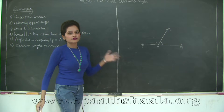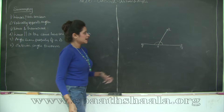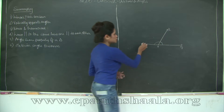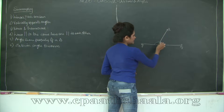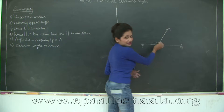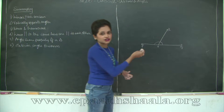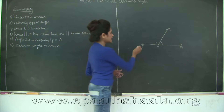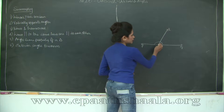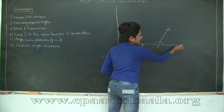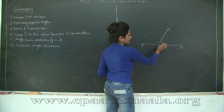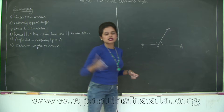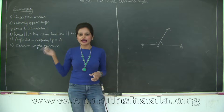Now the converse of this: if I have two adjacent angles and the sum of the two adjacent angles is 180 degrees, then the non-common rays form a straight line. This was the linear pair axiom.